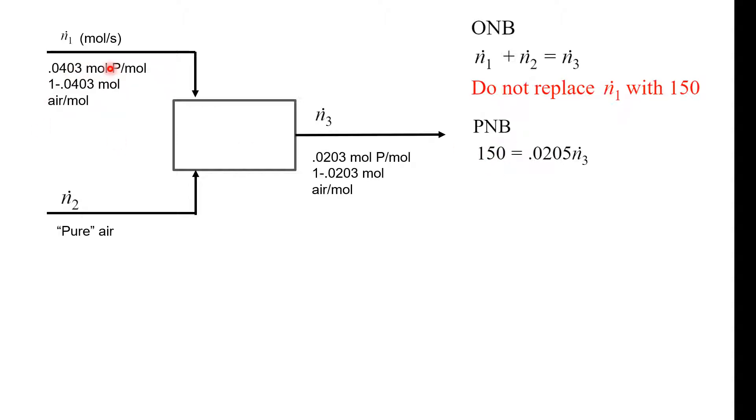Now we can do a propane balance. It said that the propane flow rate was 150. This is the molar flow rate of the propane going in and we can set it equal to the molar flow rate of the propane coming out. Remember from the definition of the mole fraction that's how we get this expression. Oh look, one equation one unknown. Look we can actually calculate n3, so look we actually solve for that guy, that's pretty cool.